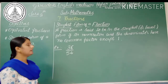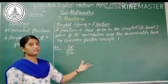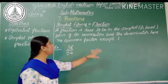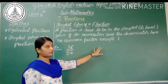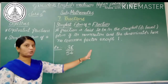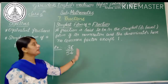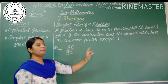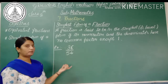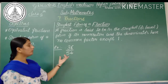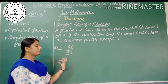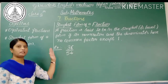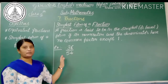Now let's look at the simplest form of a fraction. A fraction is said to be in its simplest or lowest form if its numerator and denominator have no common factor except 1. For example, let us find the simplest form of 36/54. To find the simplest form, we have to divide the numerator and the denominator by the same number.